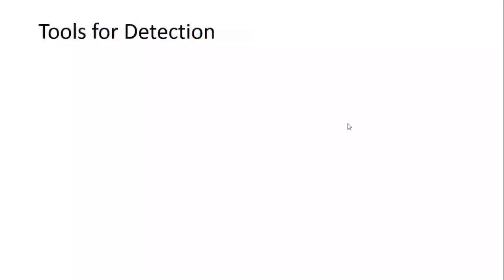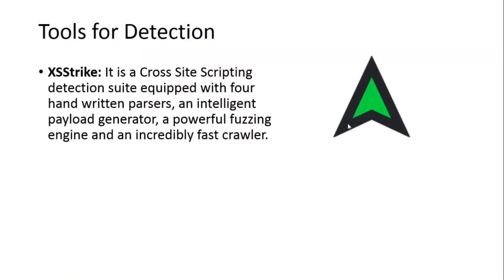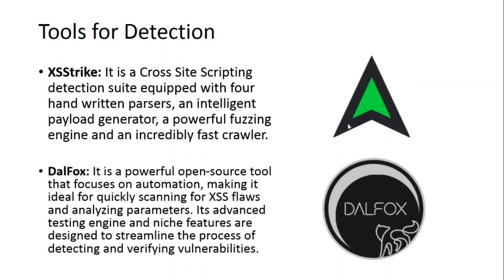Tools for detecting Reflected XSS include XSStrike, a cross-site scripting detection suite equipped with four handwritten parsers, an intelligent payload generator, a powerful fuzzing engine, and an incredibly fast crawler, which can be used for detecting Reflected XSS. Another tool is Dalfox, a powerful open-source tool that focuses on automation, making it ideal for quickly scanning for XSS flaws and analyzing parameters. Its advanced testing engine and niche features are designed to streamline the process of detecting and verifying the vulnerability.